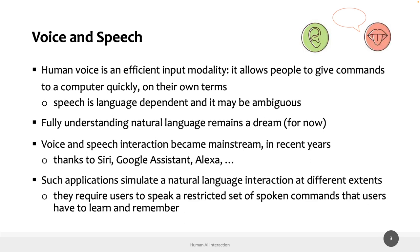We can say that human voice is an efficient input modality — you can give commands to a computer quickly vocally. Speech is language-dependent and may be ambiguous. We've seen examples of Google Home with elderly people and Alexa with different accents. Fully understanding natural language remains a challenge, even if with the advent of ChatGPT we are reaching a good level of understanding. Voice and speech interaction became mainstream thanks to Siri, Google Assistant, and Alexa, and these applications simulate a natural language dialogue.